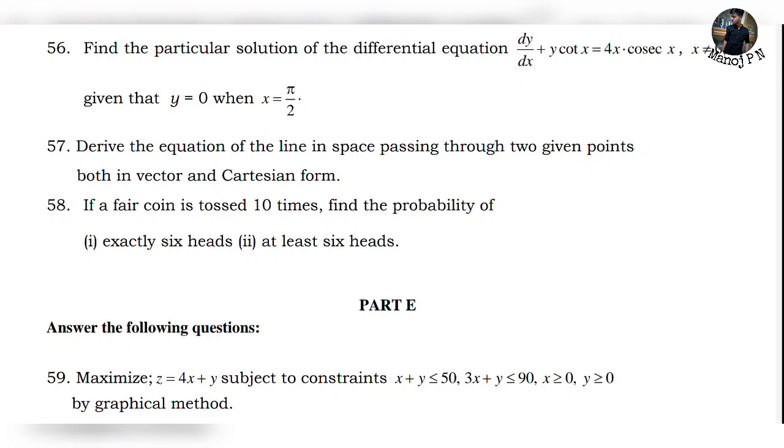If you know the derivations, like derive the equation of line in space passing through two given points both with vector and Cartesian form, if you know the derivations, you get completely done. There is no big issue in learning the derivations because there is no bias.